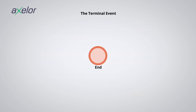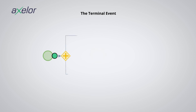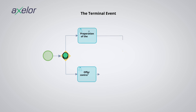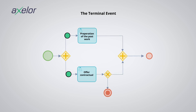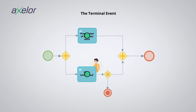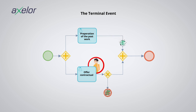The terminal event: these are events represented with a solid circular pictogram. As soon as they are activated, the whole process is stopped. In this example, following the validation of an application, we have to prepare the arrival of a potential new employee — making sure the workstation is ready and submitting the employment contract. In the event of a refusal, the whole process is stopped and all the tokens disappear simultaneously.